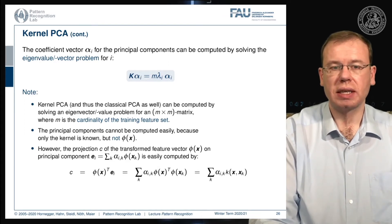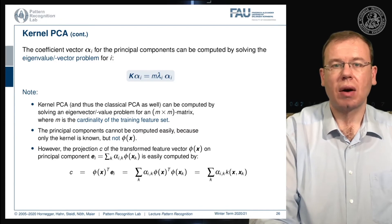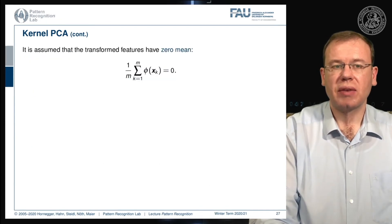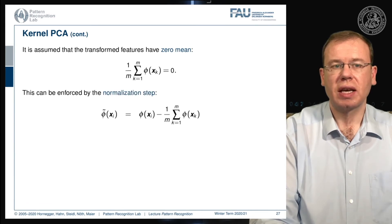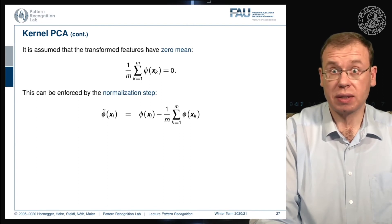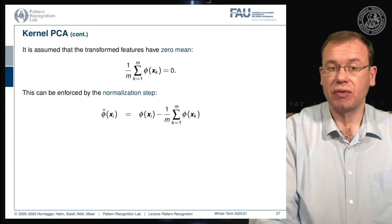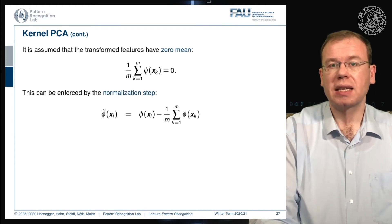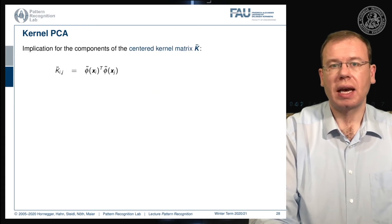We can compute those projections quite easily using the kernel matrix. Now, if we assume that we have a zero mean, we can generate transformed feature vectors by subtracting the mean of the feature vectors from the feature vector after the transformation. This gives us Phi tilde of x_i, producing feature vectors that are zero-centered. However, we need the feature transform in order to perform this centering, so let's look in a bit more detail at the implications for the centered kernel matrix.